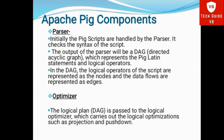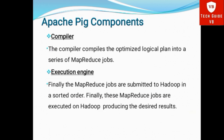Second, Optimizer. The logical plan DAG is passed to the logical optimizer, which carries out logical optimization such as projection and pushdown. Third, Compiler. The compiler compiles the logical plan into a series of MapReduce jobs. Fourth, Execution Engine. Finally, the MapReduce jobs are submitted to Hadoop in sorted order and executed on Hadoop, producing the desired results.